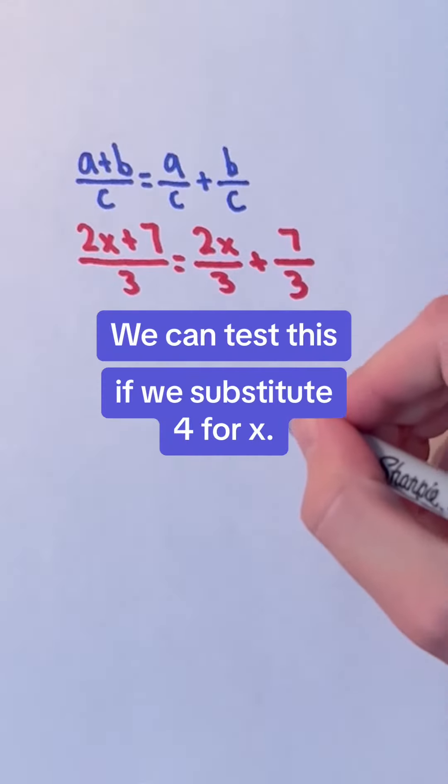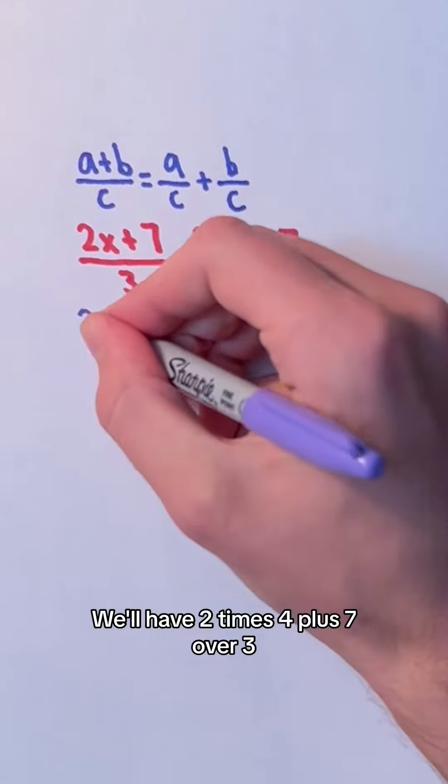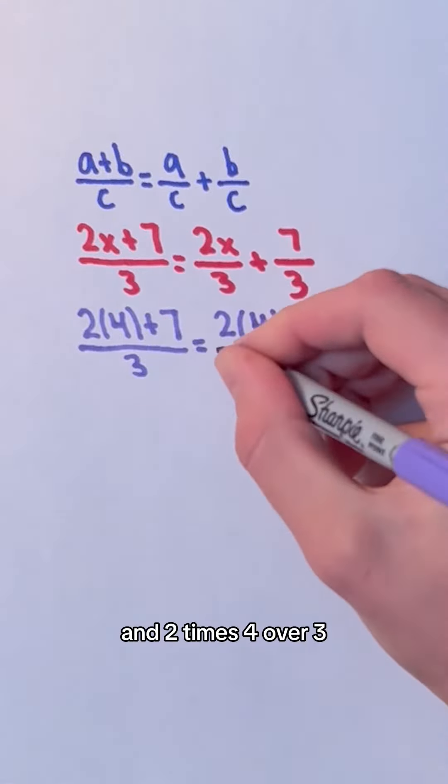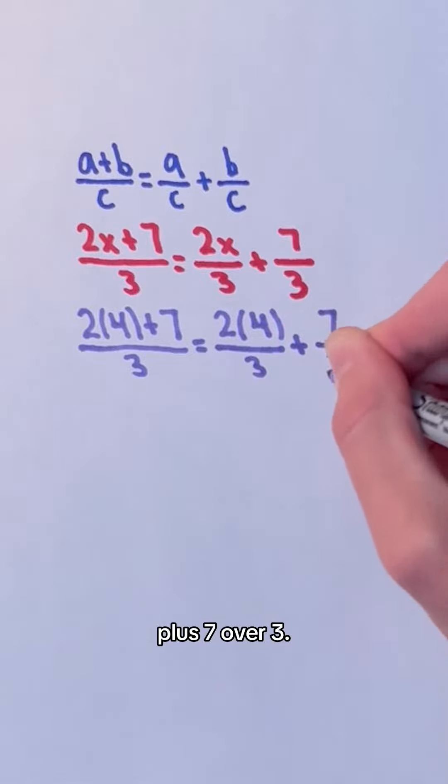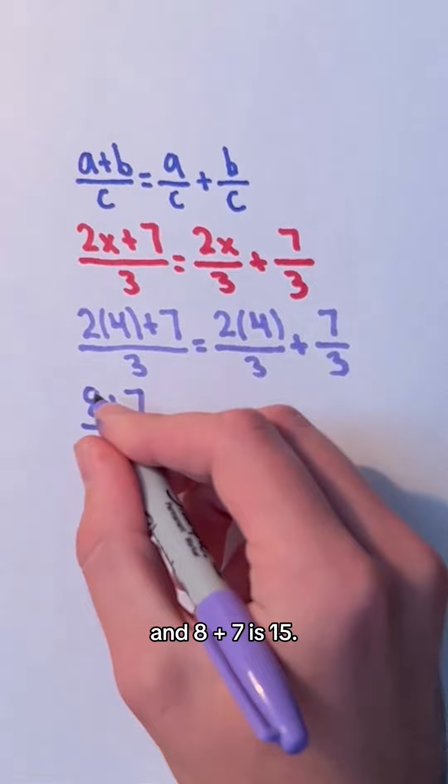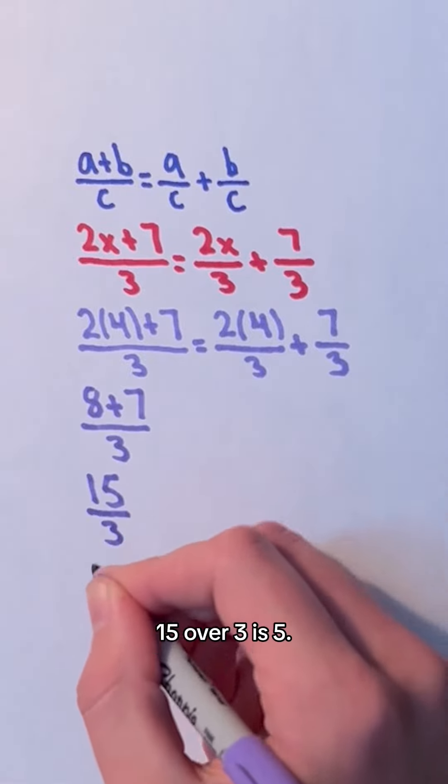We can test this if we substitute 4 for x. We'll have 2 times 4 plus 7 over 3 and 2 times 4 over 3 plus 7 over 3. Starting with the numerator of the first expression, 2 times 4 is 8 and 8 plus 7 is 15. 15 over 3 is 5.